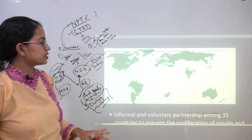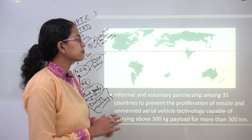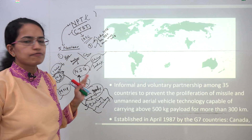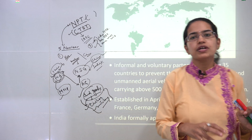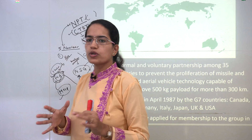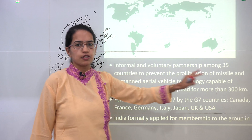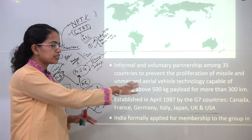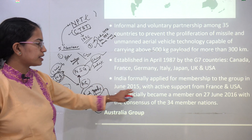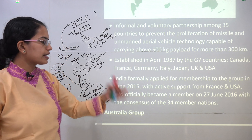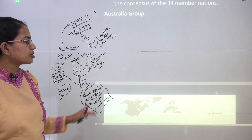The Missile Technology Control Regime has 35 member nations and prevents the proliferation of missile technology with a payload of more than 500 kilograms to a range of more than 300 kilometers. It was established in 1987, initially with G7 countries. India became a member in 2015, and within two years also became part of the Wassenaar Arrangement.